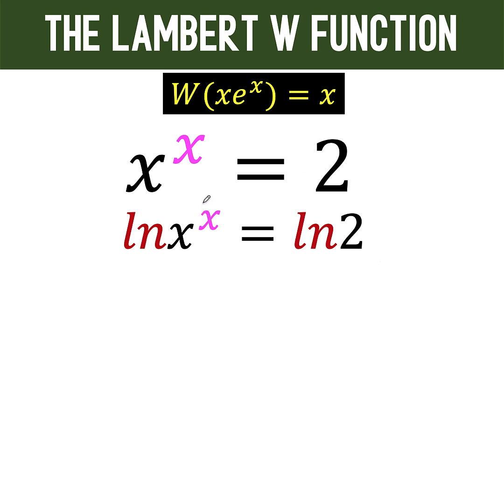Then we apply the property of the logarithm that says when you have an exponent here, that can be appended to the front as one of the factors. So we have x times ln x equals the right side, ln of 2.